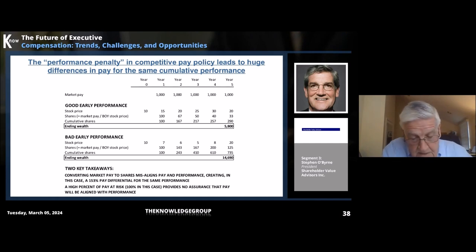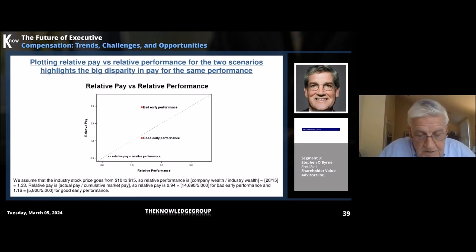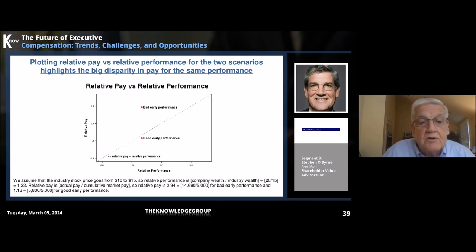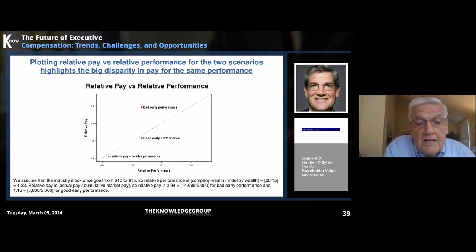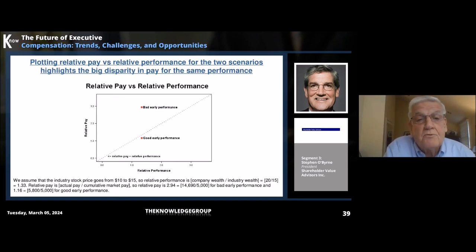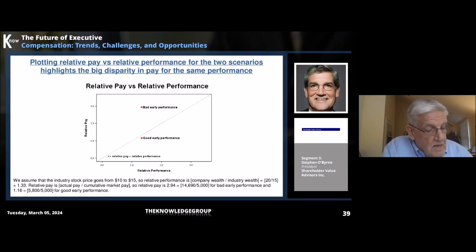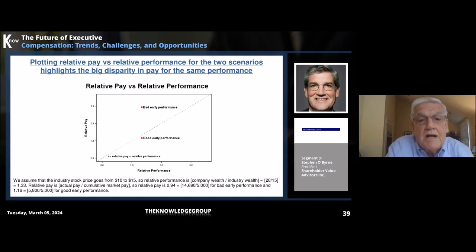Let's move to the next slide and put this example into a graph. On the vertical axis, we're going to plot relative pay. In bad early performance, we ended up with $14,690 versus cumulative market pay of $5,000 — that's a multiple of almost three, so we see bad early performance way up top. For good early performance, we ended up with $5,800 versus market pay of $5,000, so that's way down below at a relative pay of 1.16.